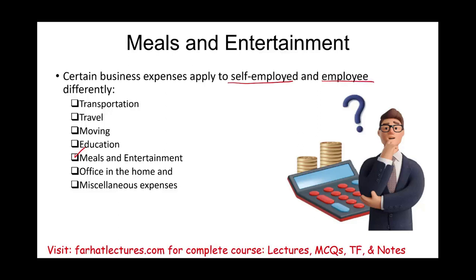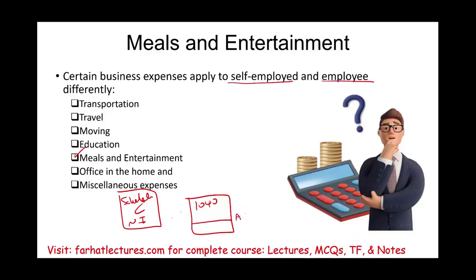If you're a self-employed individual, you are going to prepare a Schedule C and you're going to either have a net income or a net loss. Then you're going to prepare your Form 1040, and on your Form 1040 you're going to arrive at adjusted gross income. Net income goes above adjusted gross income. Therefore, meals and entertainment for business purposes are deducted for AGI.